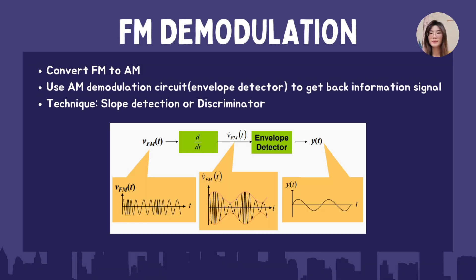Now let's go into FM demodulation. FM demodulation is basically the conversion of FM to AM, using an AM demodulation circuit which is the envelope detector learned from the last chapter to get back the information signal. This technique is also known as slope detection or discriminator. This block diagram of FM demodulation shows at every stage the changes on the graph, and from V(t) we get back the AM modulating signal.